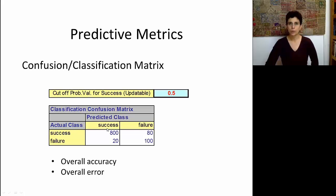And I can see, for instance, in this example, that the classifier successfully classified 800 of the successes, and also correctly classified 100 of the failures. It misclassified 20 and 80 of the records.